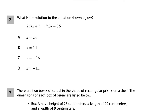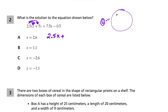Question 2: we want to know the solution to the equation. We start by using the distributive property, sending 2.5 through the parentheses. So we get 2.5 times x, plus 2.5 times 5. For the multiplication, I think of 25 times 5 is 125, and since we have one decimal place, 2.5 times 5 is 12.5. Then on the right side we have 7.5 times x minus 0.5.